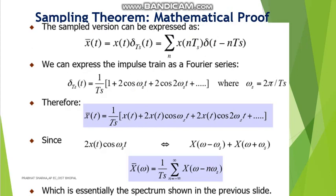For the mathematical proof of the sampling theorem, we need to understand Fourier series and Fourier transform. The sampled version can be expressed as x̄(t) = x(t) · δ_Ts(t), where x(t) is the message signal and δ_Ts(t) is the periodic impulse function. This can also be written as the summation of x(nTs)·δ(t − nTs). We express the impulse train as a Fourier series since it is periodic. The result shows that 2x(t)cos(ω_c·t) has Fourier transform X(ω − ω_s) + X(ω + ω_s), derived using the frequency shifting property. The final expression gives the spectrum shown in the previous slide, where the message signal shifts on the periodic impulse function.